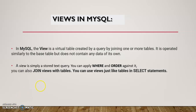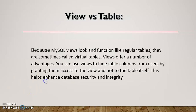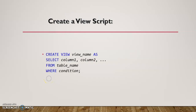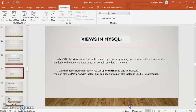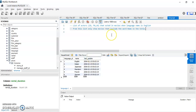A view grabs data from the tables — it doesn't have data in itself. It's a virtual table that grabs data from other tables. It's useful because you can hide table names from end users. The script for a view is simple: you type CREATE VIEW, or in Workbench you can just right-click and create a view, and then add your SELECT statement.